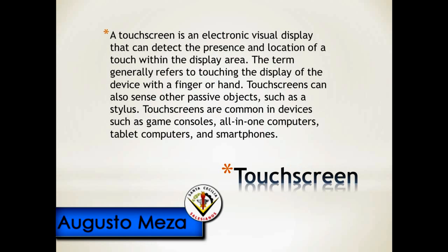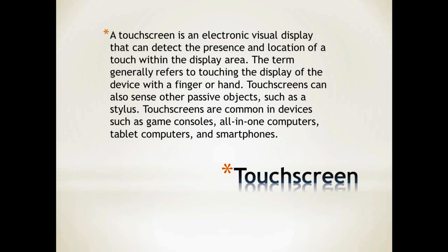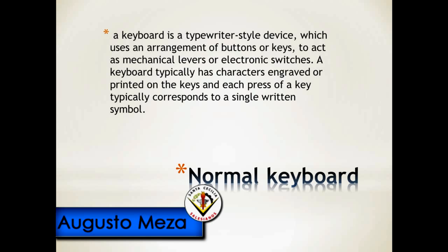A touchscreen is an electronic visual display that can detect the presence and location of a touch within the display area. This term generally refers to touching the display of the device with a finger or hand, but it can also sense other passive objects such as a stylus. Touchscreens are common in devices such as game consoles, all-in-one computers, tablets, and smartphones.